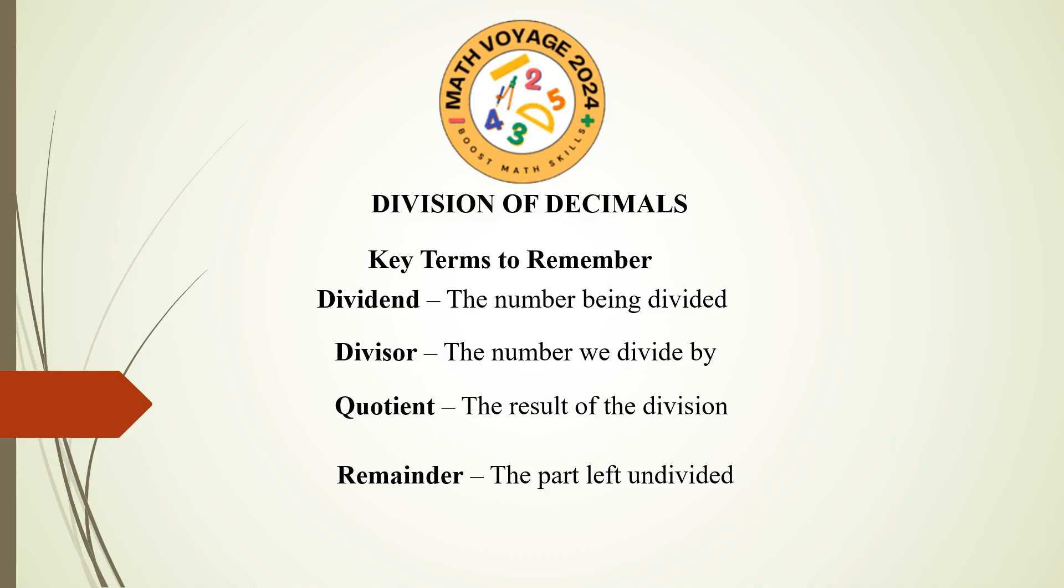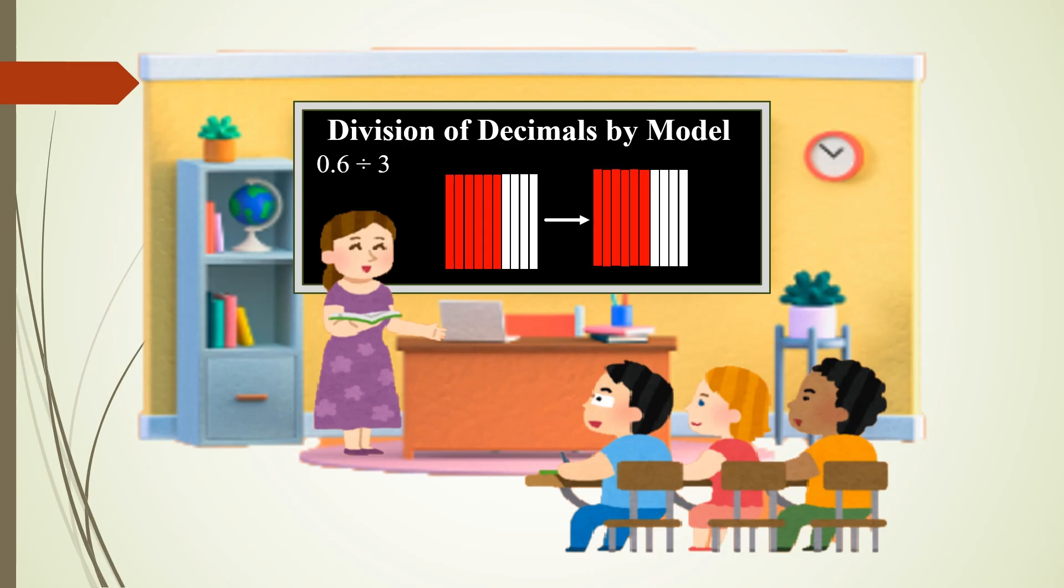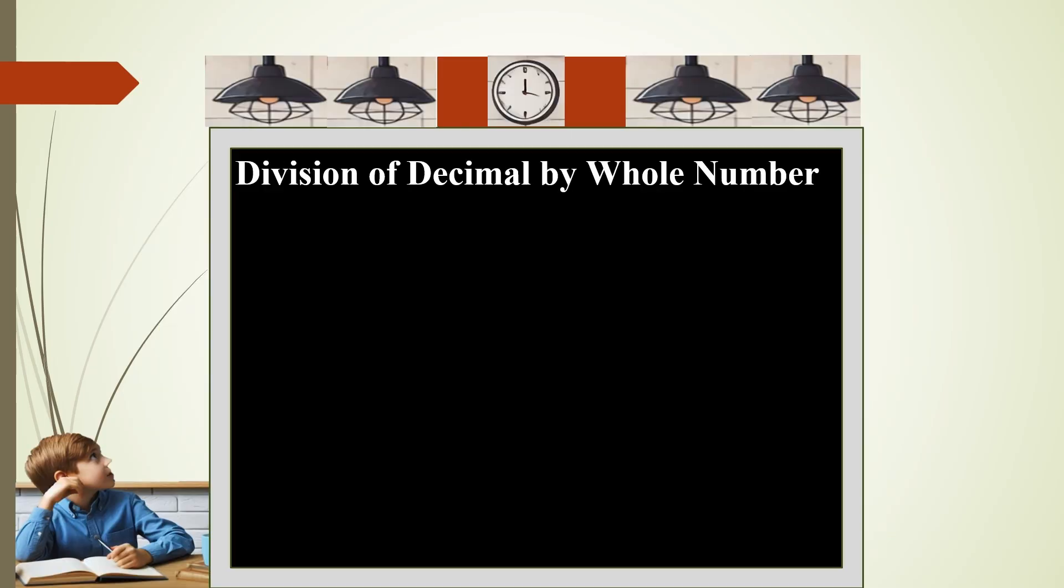First is division of decimals by models. For that, let us take a very simple example: 0.6 divided by 3. Take a square which is divided into 10 strips. Each strip represents 0.1. Out of this, color 6 in red. When you divide these six strips into three parts, we get here 2. 2 times 3 is 6, so the answer is 0.2.